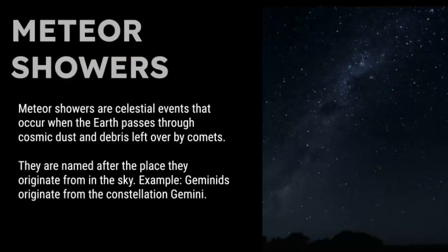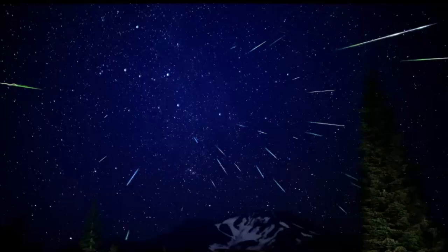Meteor showers are named after the place they appear to originate from in the sky. For example, the Geminids meteor shower originates from the constellation Gemini. The Lyrids meteor shower appear to originate from the constellation of Lyra. When we photograph meteor showers, if we trace these streaks of light back to the origin point, we call this a radiant.